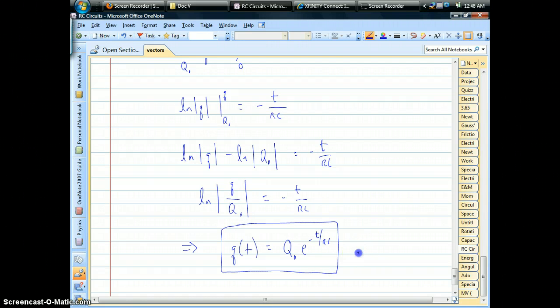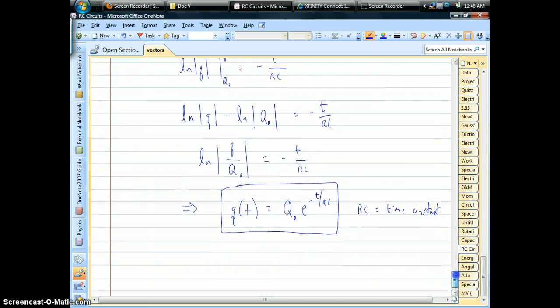Keep in mind this constant, RC, is called the time constant. And that determines how quickly or how slowly the capacitor discharges. So we have control over that.